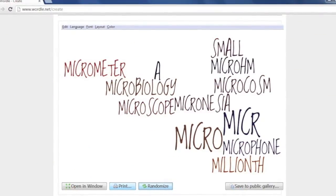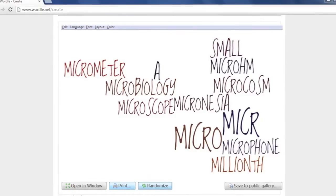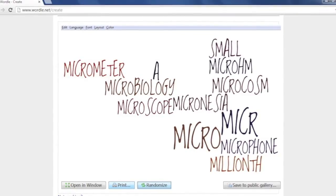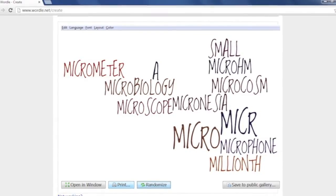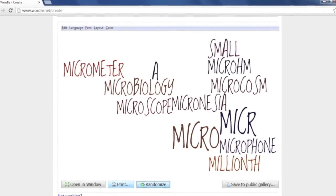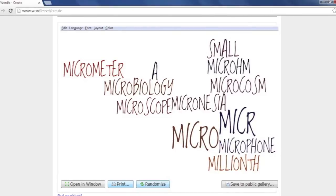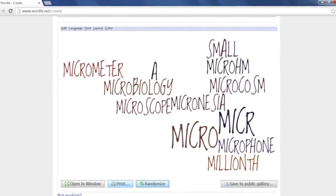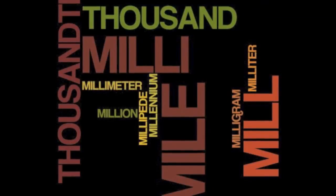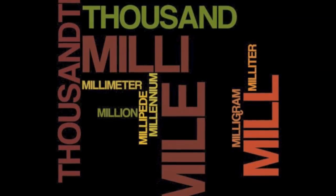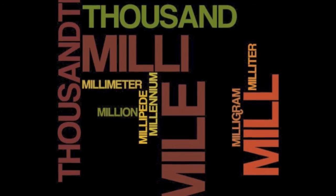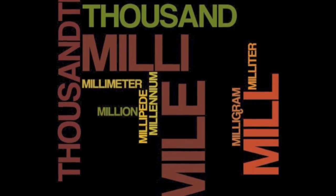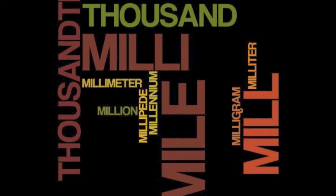Micro means millionth or small — millionth in micrometer, or small in microbiology. Mill and milli mean thousand or thousandth, such as in millimeter, million, millipede, or millennium.